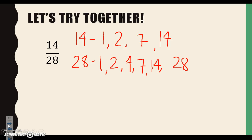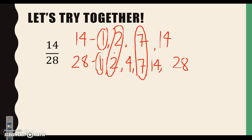Let's take a look and circle the factors that they have in common. They have 1 in common, 2 in common, 7 in common, and they also have 14 in common. Remember that when we want it to be in simplest form, we're going to choose the greatest or the largest factor to divide our numerator and denominator by. Our biggest factor is 14, so we're going to divide both our numerator and denominator by 14.